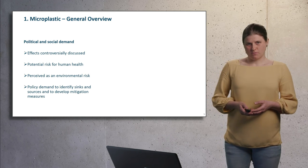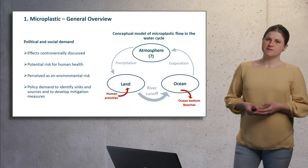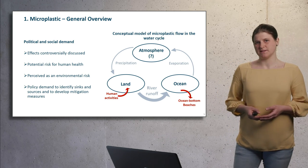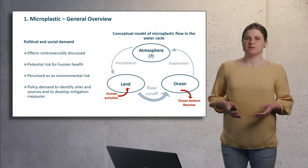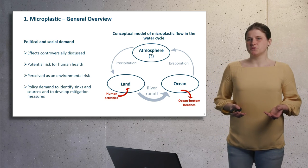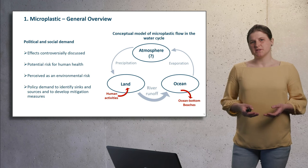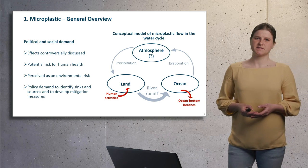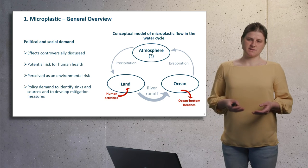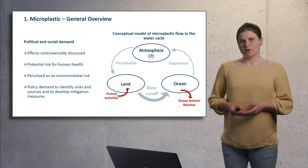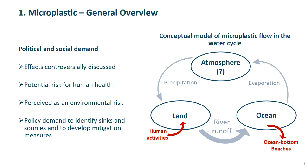Sea bottom sediments have largely been proposed as final sinks. This is reasonable, considering that most microplastic is produced and consumed on land and, like sediments in the water cycle, is transported via rivers into the oceans. The extent to which rivers may act as a sink for microplastic is subject of current research. The role of atmospheric transport has only recently gained attention; particles in the lower microplastic and nanometer range are thought to be important for long-distance transport.